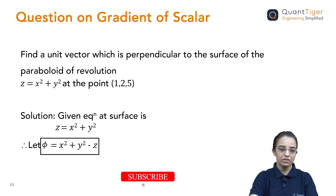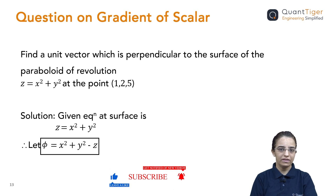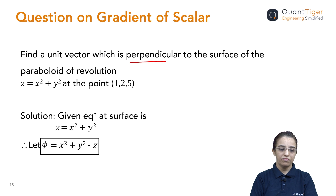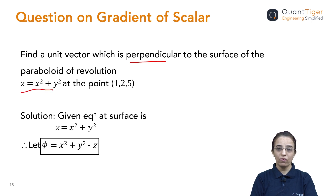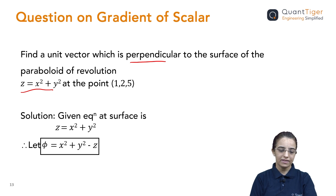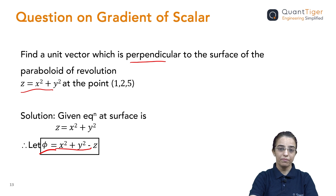Now I have taken a question so it will be clear how to find the gradient of a given scalar function. Find the unit vector which is perpendicular to the surface of the paraboloid of revolution z = x² + y² at the point (0, 1, 2, 5). I have taken this question and we need to find the unit vector at point (1, 2, 5). The given equation is written in proper format, and I have used the symbol phi to represent the equation of that particular surface. So phi = x² + y² − z, by transforming the equation. I have created the equation of the surface so I can use it for further calculation.